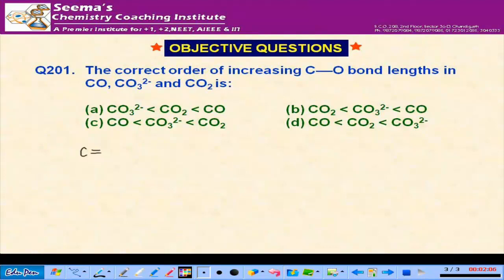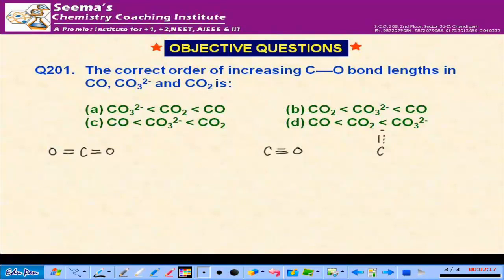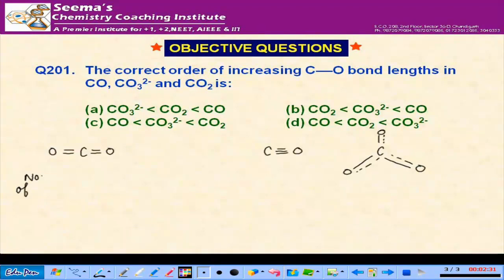For carbon dioxide, the number of bonds is 2 (double bond). For carbon monoxide, the number of bonds is 3 (triple bond). For carbonate, due to resonance, all bonds have partial double bond character, so the bond order is 1.5.